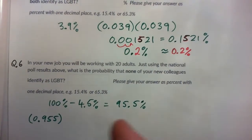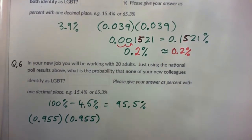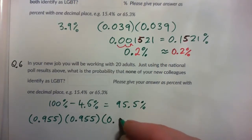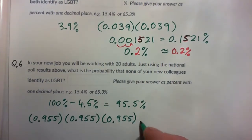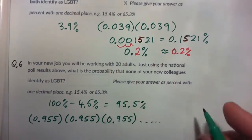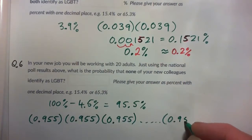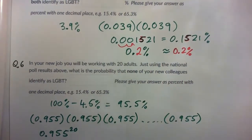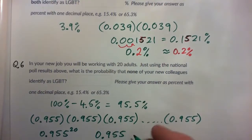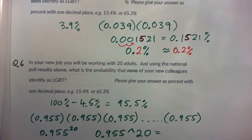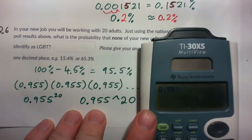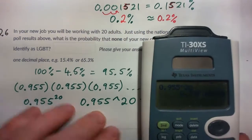The probability that two random adults don't identify is 0.955 times 0.955. For three random adults, you multiply again by 0.955, and so on. Since we've got 20 adults, we multiply 0.955 twenty times — that's 0.955 to the power of 20. In your calculator, 0.955 to the power of 20 gives 0.39816.